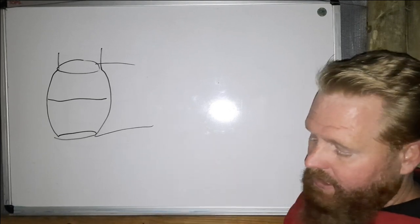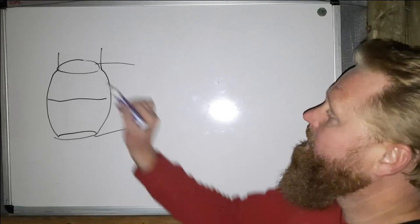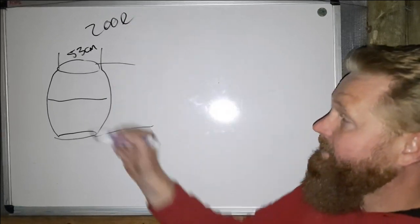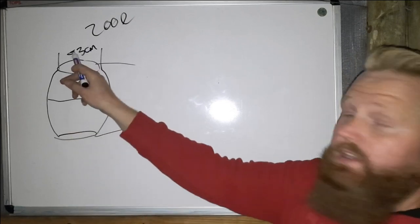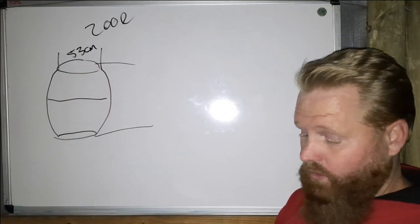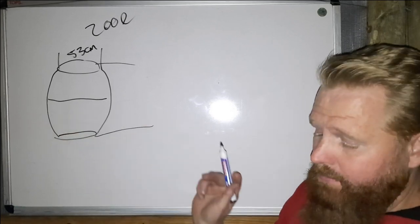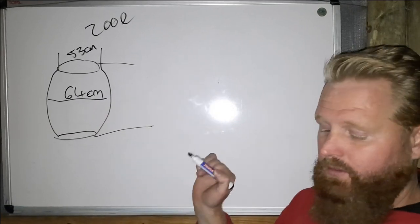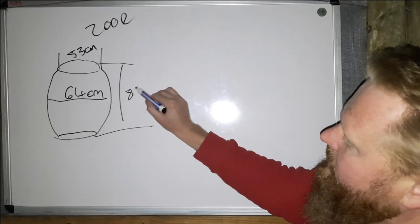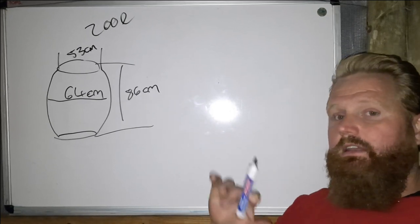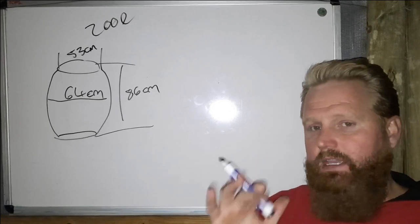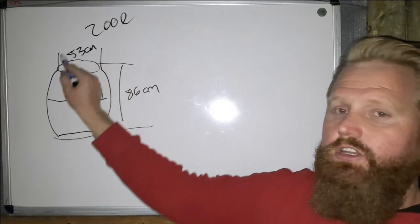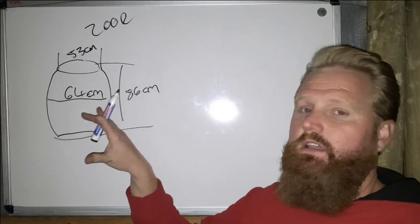For a 200-liter barrel the dimensions are as follows: the cap dimension is 53 centimeters, the diameter at the bulge is 64 centimeters, and the height of the barrel is 86 centimeters. What I did wrong previously was use the cap dimension to calculate the volumes and surface areas of the barrel, which caused me to undershoot the amount of surface area.